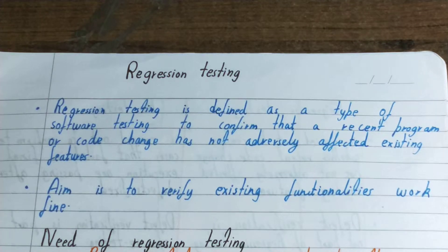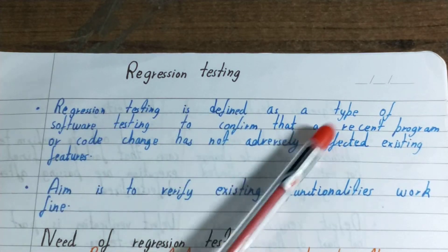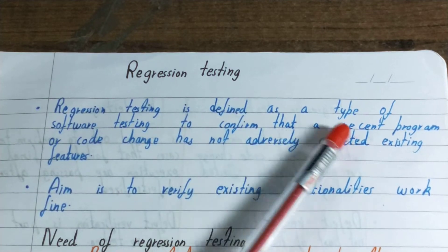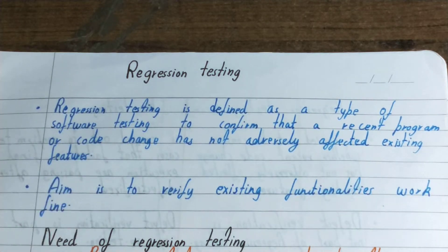The main aim of regression testing is: if there is a change or modification in the code of the software, then the software should still work as it was working before those changes. The definition says it is a type of software testing to confirm that a recent program or code change has not adversely affected the existing features. We verify whether the existing features are working as they were before the change.